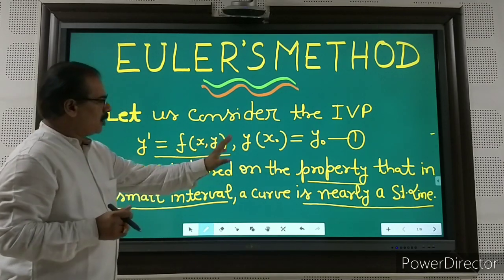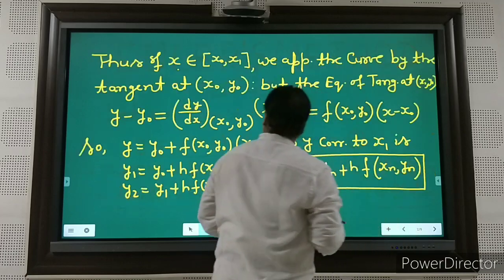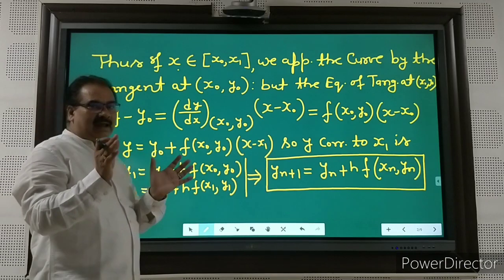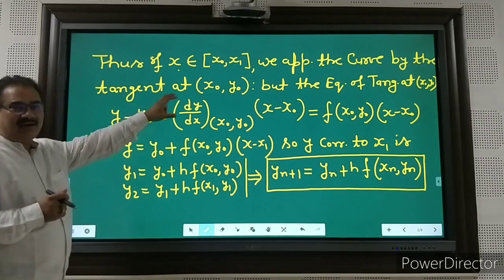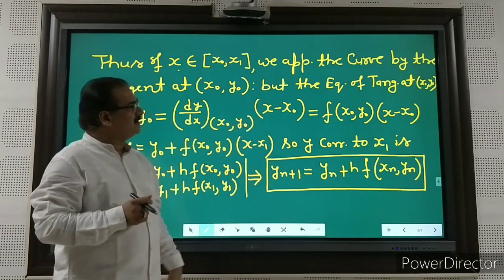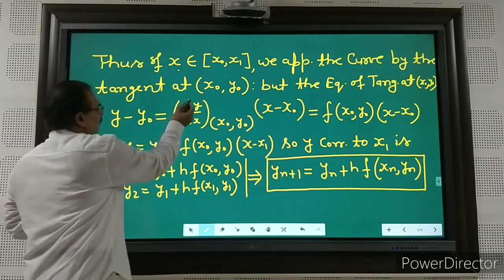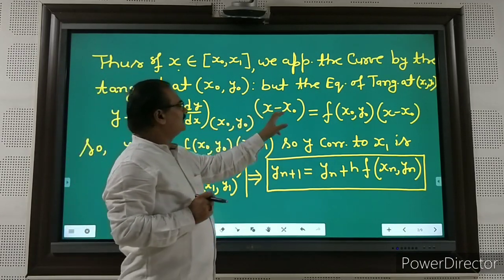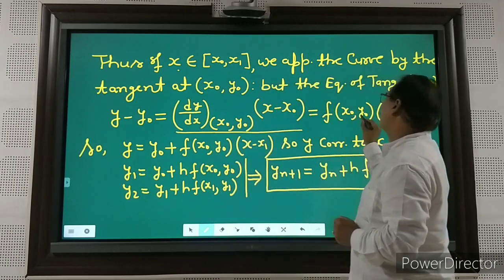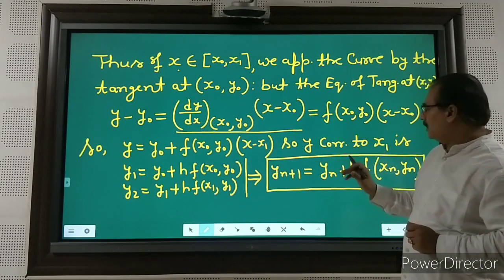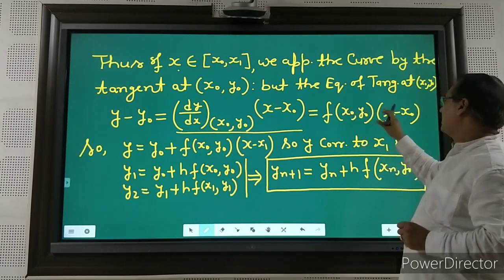Once again: in a small interval, a curve is nearly a straight line. Now, if x is between x₀ and x₁, very close to each other, we approximate the curve by the tangent at (x₀, y₀). The equation of the tangent at (x₀, y₀) is: y − y₀ = (dy/dx) at (x₀, y₀) · (x − x₀), which can be rewritten as f(x₀, y₀)·(x − x₀), since dy/dx = y' = f(x, y).